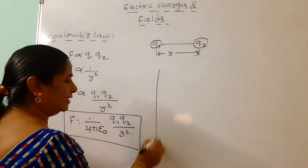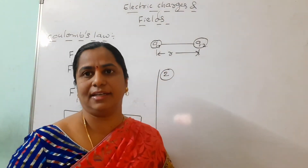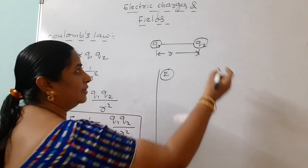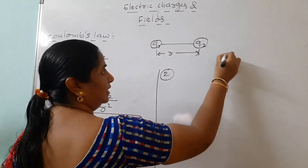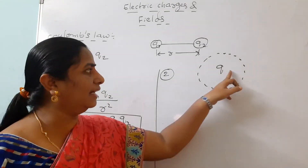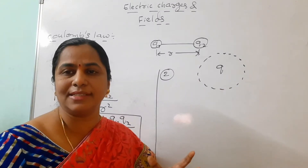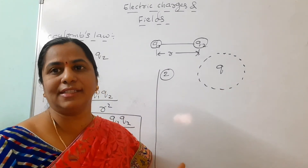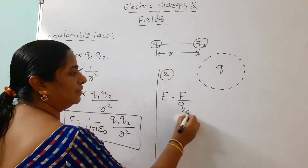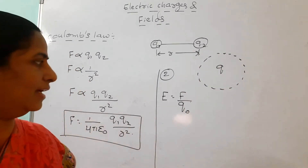Our second SAQ is: what is the intensity of electric field, and what is the intensity due to a point charge? A charge modifies the space around it — we can observe an electric field, and the intensity or strength varies from place to place. Intensity is defined as force per unit positive test charge: the force per unit test charge is called the intensity of electric field.